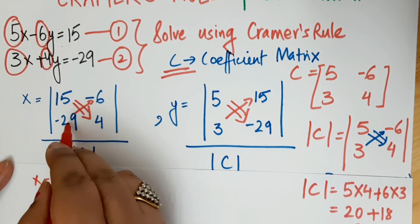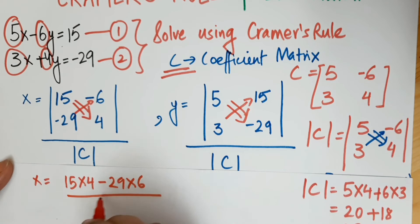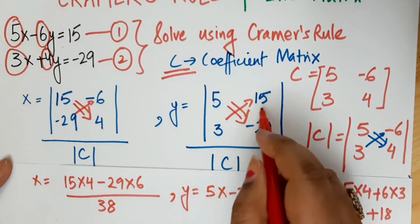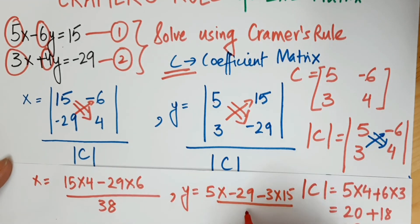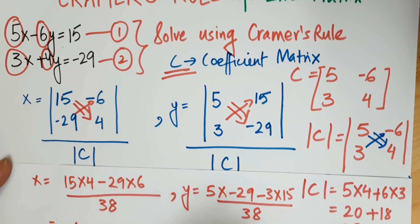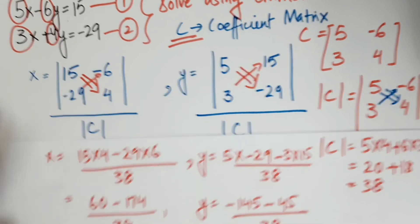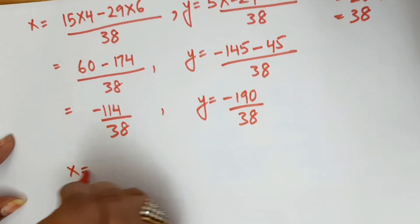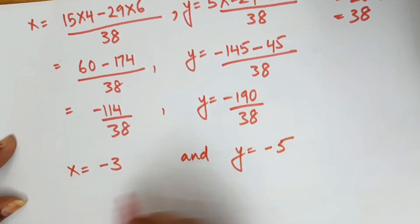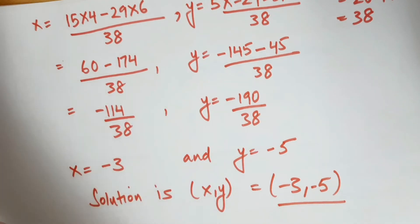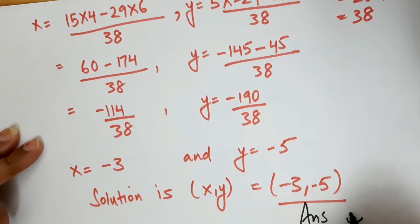This comes out to be 20 minus of −18, so that becomes 20 + 18 = 38. So the denominator is 38. Now simplify the numerator using the diagonal rule for x; the denominator is 38. Do the same process for y — multiply the primary diagonal, subtract the product of the secondary diagonal, divide by 38. Using your calculator to simplify, x comes out to be −114 divided by 38, which is −3, and y comes out to be −190 divided by 38, which is −5. So the solution set (x, y) is (−3, −5).